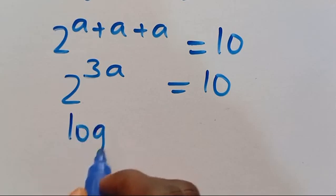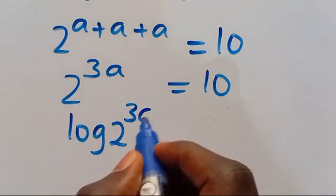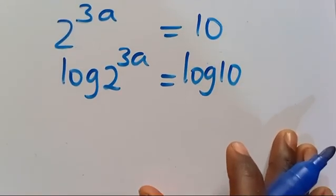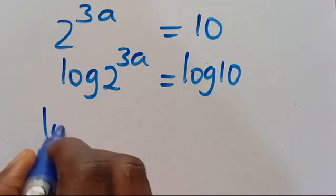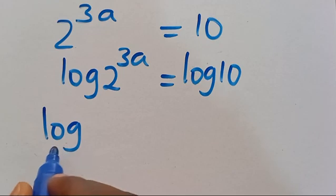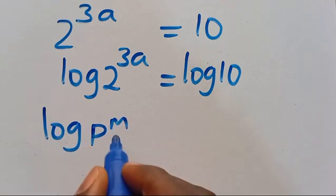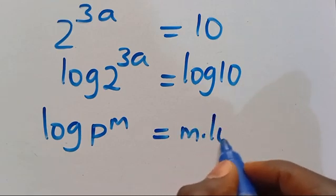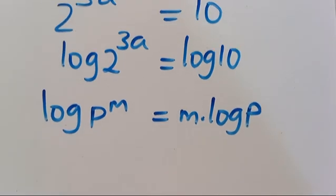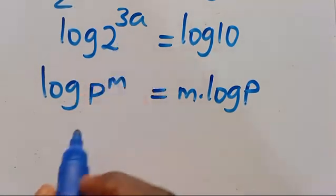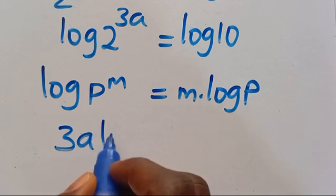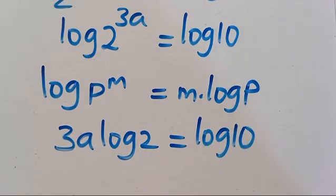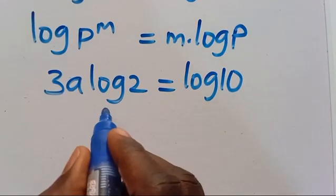From here, a plus a plus a gives us 3a, so we have 2 to the power of 3a equals 10. Now let's introduce the log: log of 2 to the power of 3a equals log 10. Recall from the power rule of logs that log p to the power of m equals m multiplied by log p. So this power 3a comes down to give us 3a multiplied by log 2, equals log 10.